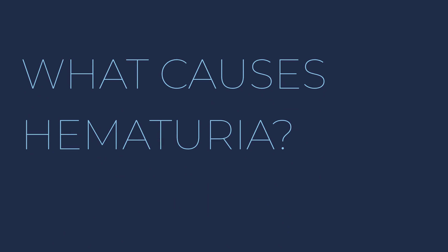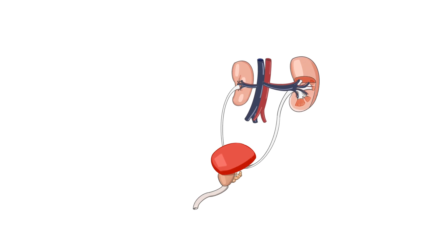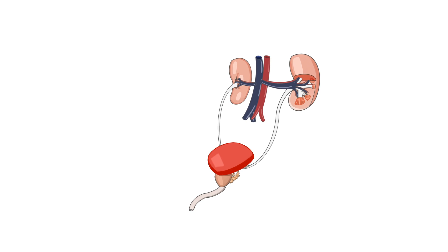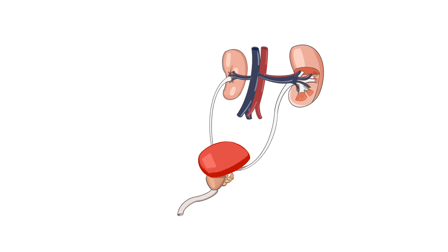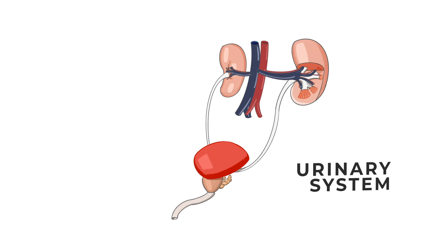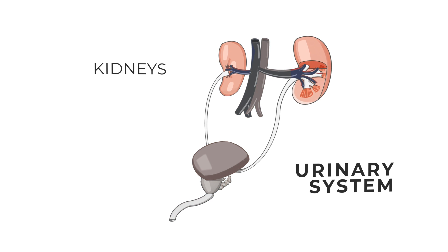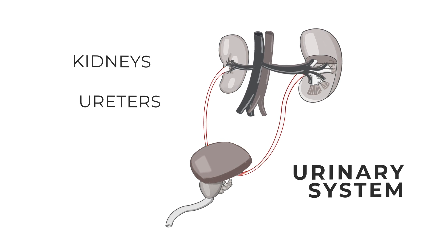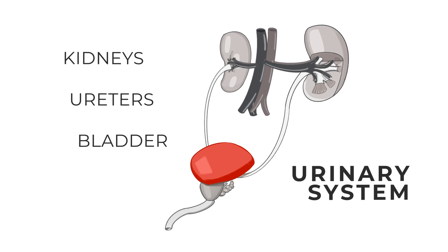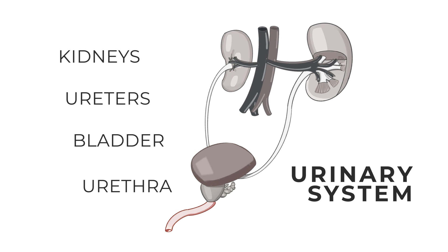What are the causes of gross hematuria? First, it's important to understand the urinary tract and what goes into making your urine. What we have here is the anatomy of the urinary system, first starting with the kidneys on top. The kidneys produce the urine, and the rest of the system is designed to transport the urine out of the body — through the ureters, the bladder, and the urethra, and then out of the body.